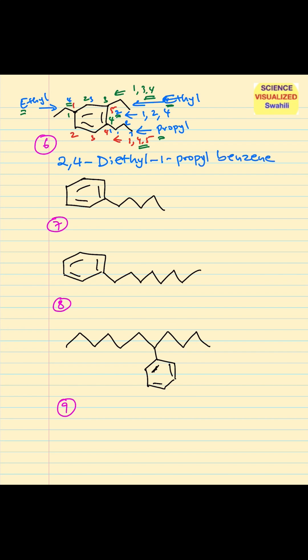If you look at the next structure, we know that we have six carbons in the cyclic system. Now, let's look at the straight chain — we have one, two, three, four, five — five carbons in the open chain system. That is shorter than the six carbons, and therefore the six carbons becomes the parent name. Five carbons — that will be pentyl. Think about pentagon — five-sided. The name of this compound will be pentylbenzene, and benzene is the parent.